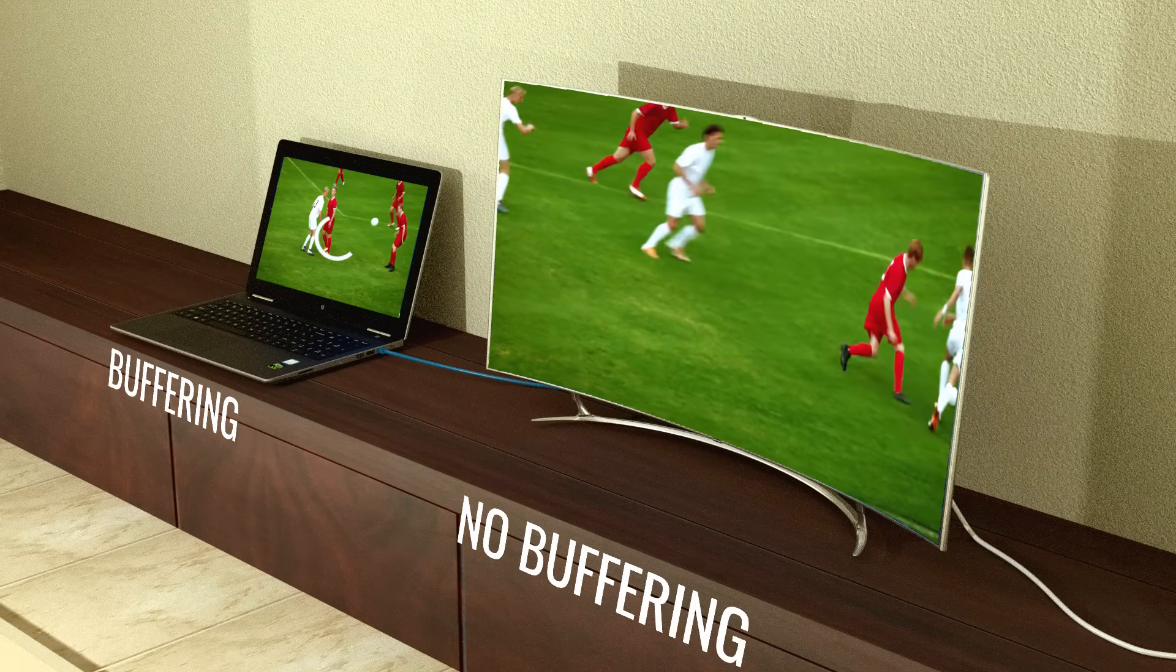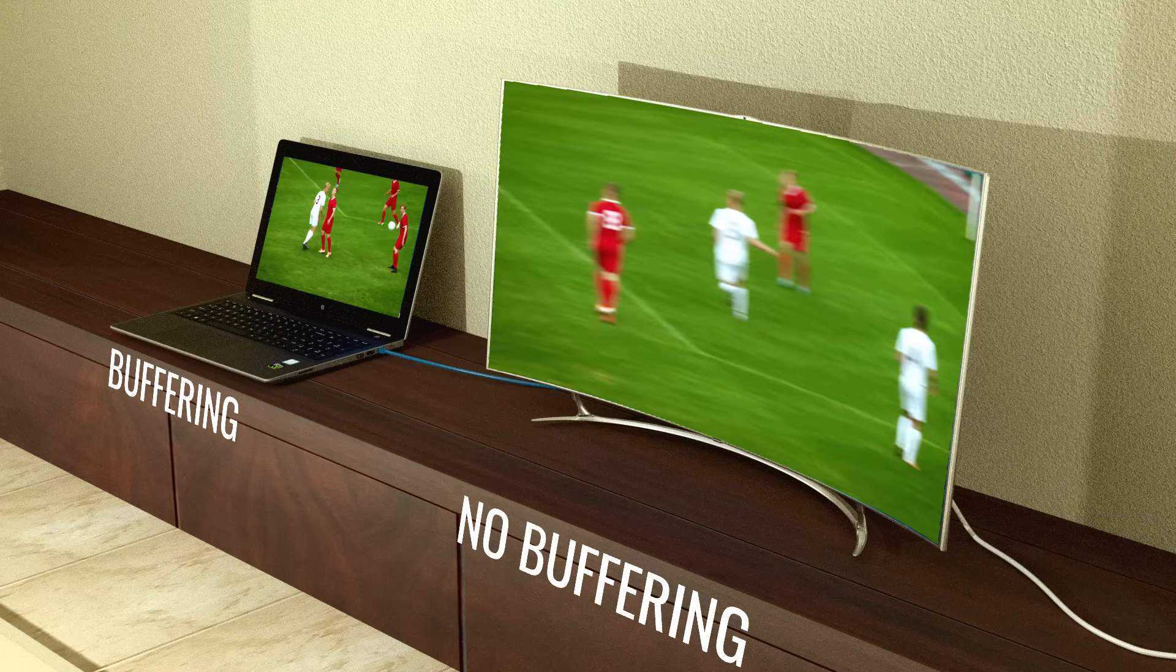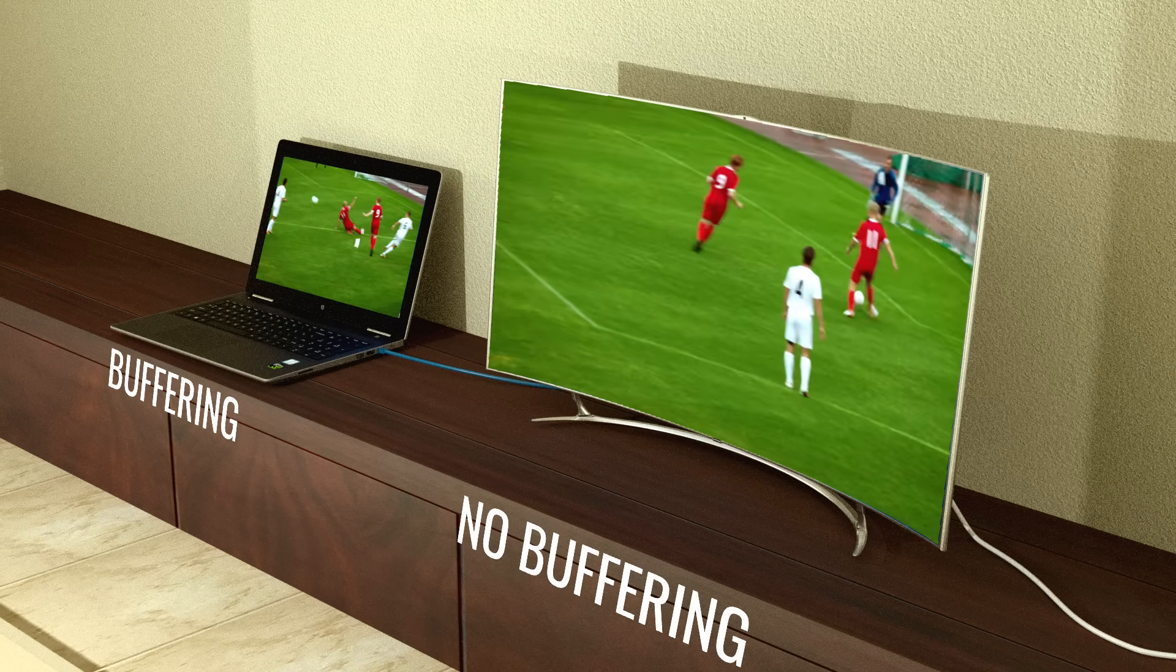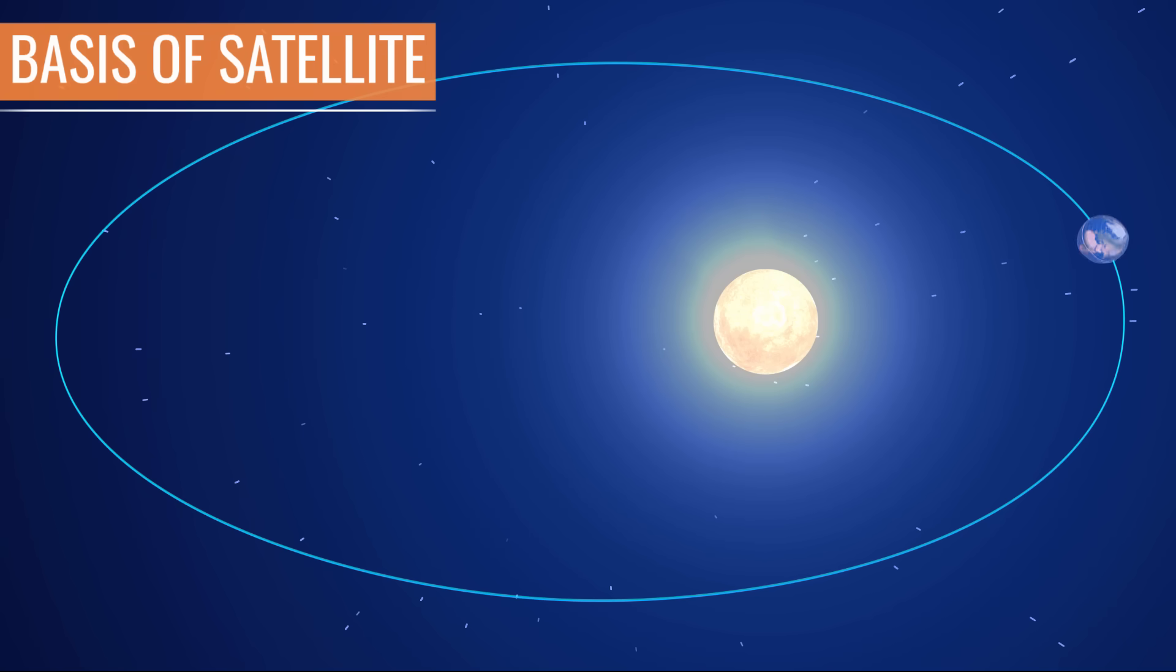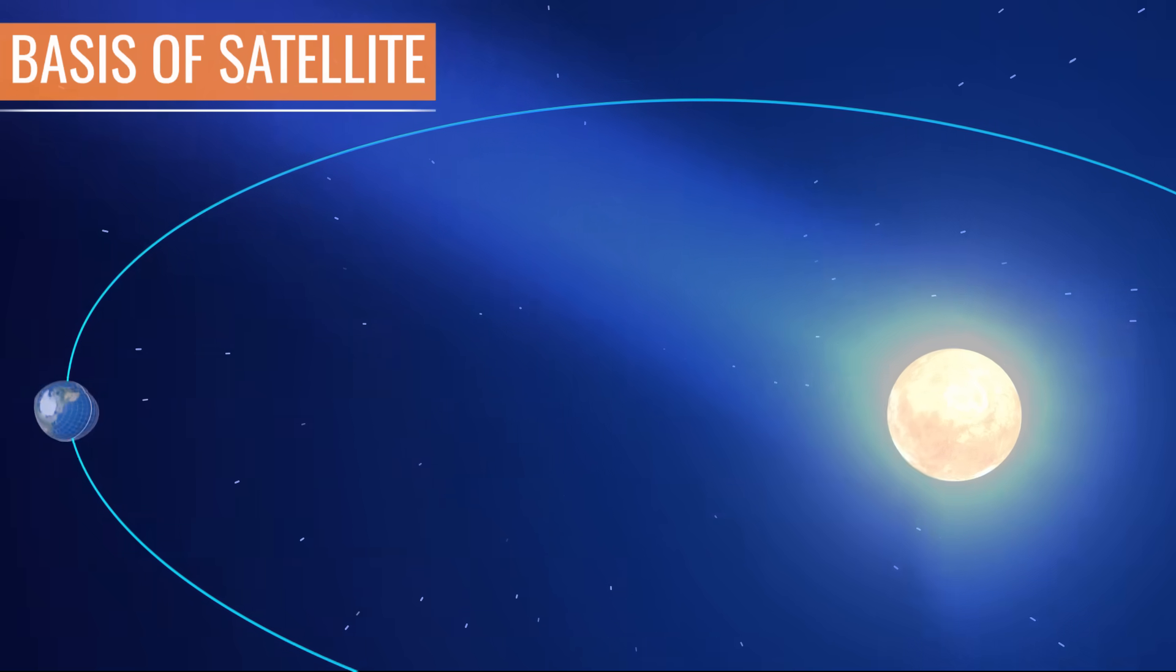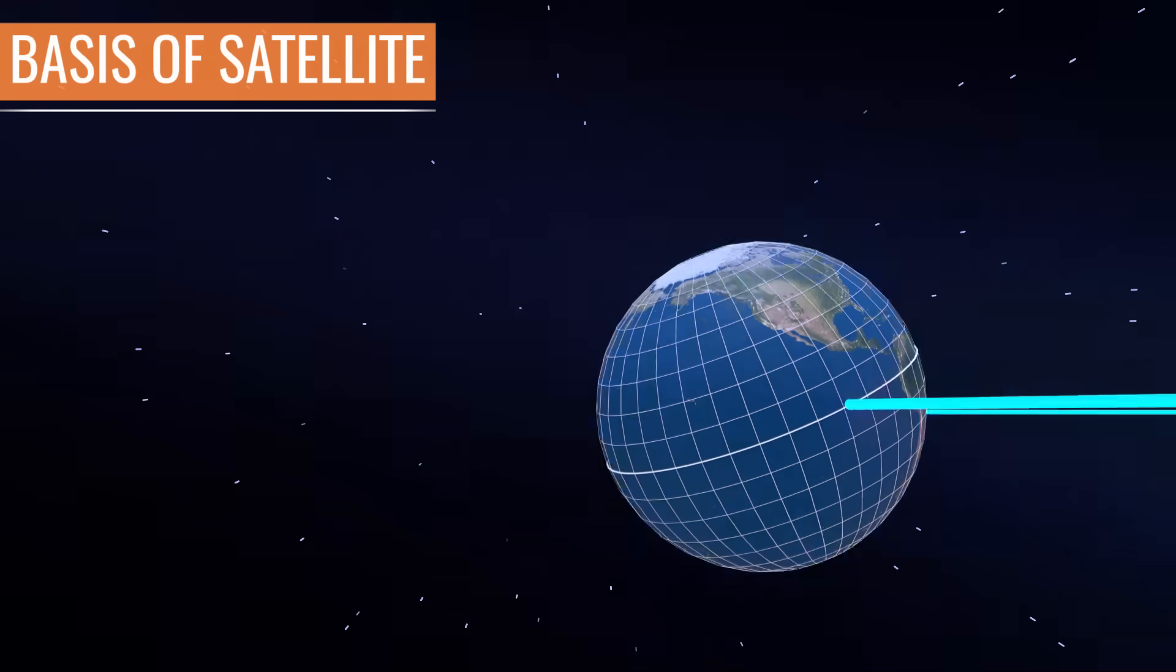To understand satellite TV broadcasting properly, we first need to have some basic knowledge about the parts of a satellite and how a satellite moves. As you can see, the Earth revolves around the Sun in an elliptical orbit, and the Earth also turns on its own axis.